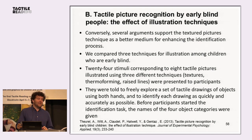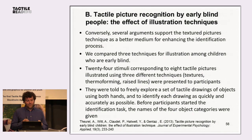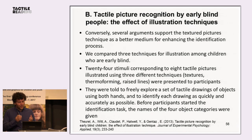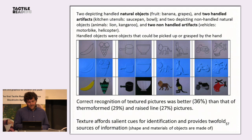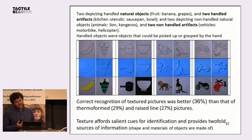We compared three techniques for illustration among children who were congenitally or early blind. Twenty-four stimuli corresponding to tactile pictures illustrated using three different techniques — texture, thermoforming, and raised line — were presented to participants. They were told to freely explore the tactile drawings using both hands and to identify each drawing as quickly and accurately as possible. Before the task, the names of four object categories were given: two natural objects such as banana and grapes, two handled artifacts such as kitchen utensils, and two non-handled artifacts such as motorbike and helicopter.